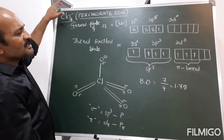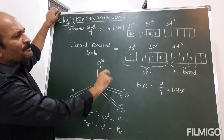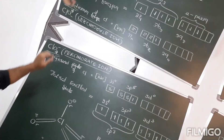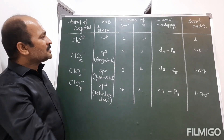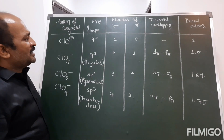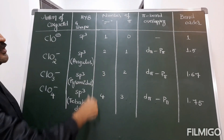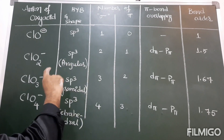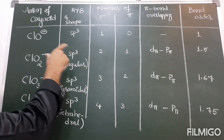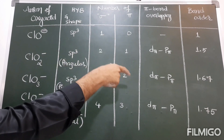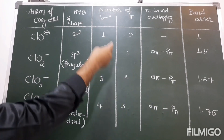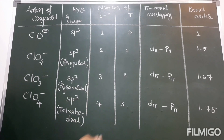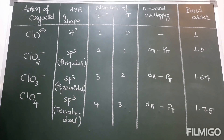Let's consolidate all the ions for comparative study. This overall comparison is very useful for understanding bond orders, hybridization, and related properties of all chlorine oxy acid anions together.